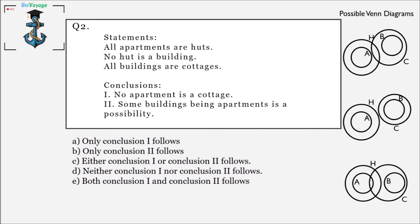The first conclusion is 'no apartment is a cottage.' We can see that no hut is a building and all buildings are cottages, but we cannot definitively say no apartment is a cottage — in one possible case I made a circle that intersects, but it does not necessarily have to be true or false. The second conclusion is 'some buildings being apartments is a possibility.' However, since all apartments are huts, no hut is a building, and all buildings are cottages, buildings clearly cannot be part of apartments. So none of the conclusions follow — the answer is D.